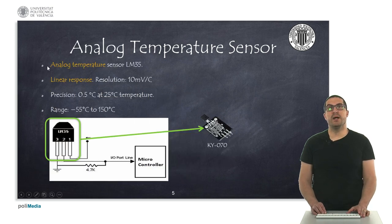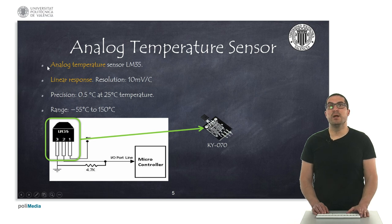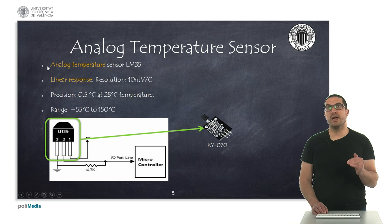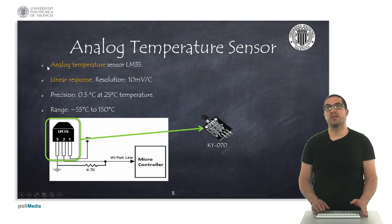We also have the LM35 sensor, which is an analog temperature sensor. The main characteristic is that it provides a linear response, with a resolution of 10 millivolts per degree. The precision is quite high, meaning the resolution between one measurement and another can be as fine as 0.5 degrees, and it has an acceptable range for all the kinds of applications that we want to deploy.